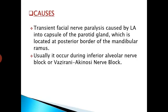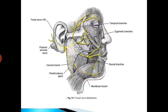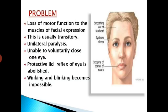It usually occurs during inferior alveolar nerve block or Vazirani-Akinosi nerve block. The terminal motor branches of the facial nerve innervate the muscles of facial expression, namely the temporal branch, zygomatic branch, buccal branch, marginal mandibular branch, and cervical branch. Problems during this complication include loss of motor function to the muscles of facial expression. This is usually transitory. Unilateral paralysis may present, with inability to voluntarily close one eye. The protective lid reflex of the eye is abolished, and blinking becomes impossible.